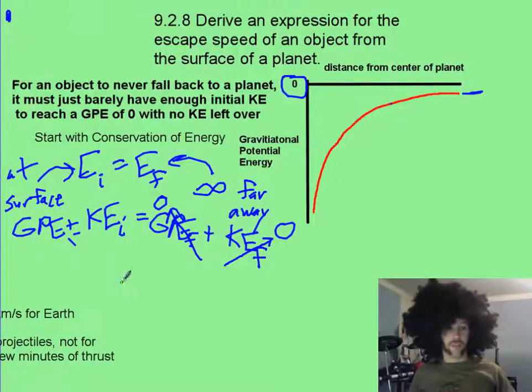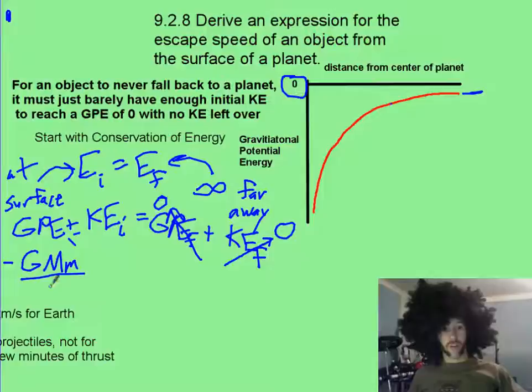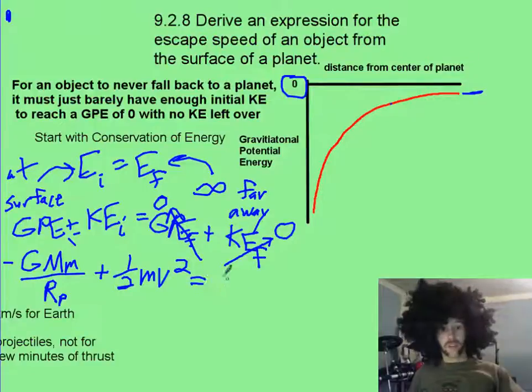that's kinetic energy of zero. Now your GPE originally is going to be minus capital G M M over R, that's your radius of the planet, and that's minus, by the way,